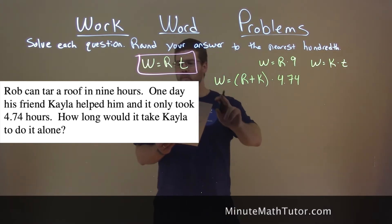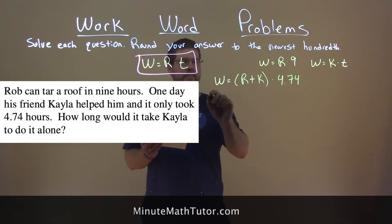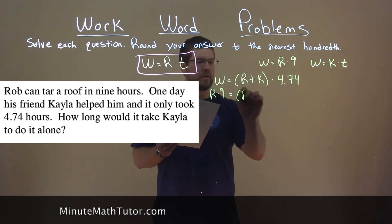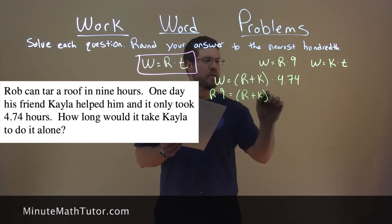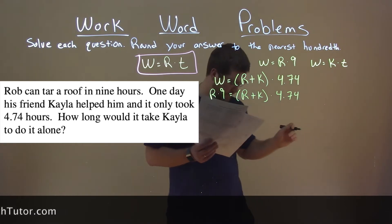Where can we go from here? We know that work is equal to r times nine. So r times nine is equal to r plus k times 4.74.